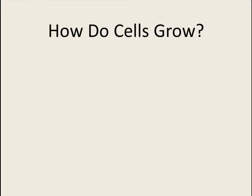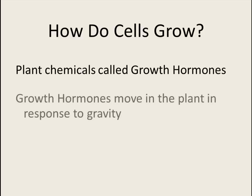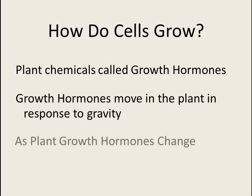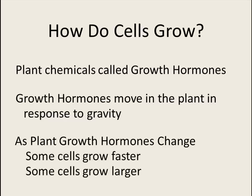How do cells grow? There are plant chemicals called growth hormones. Growth hormones move in the plant in response to gravity. As plant growth hormones change, some cells grow faster, some cells grow larger.